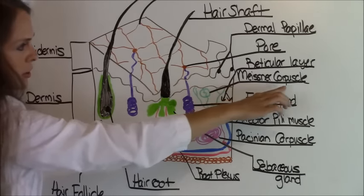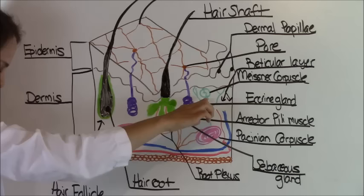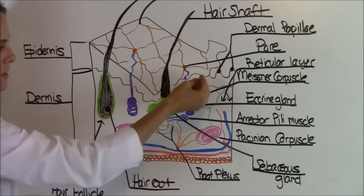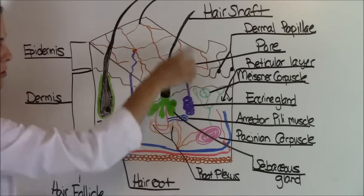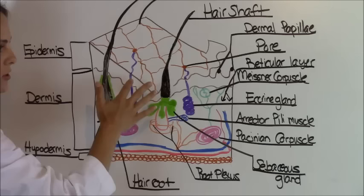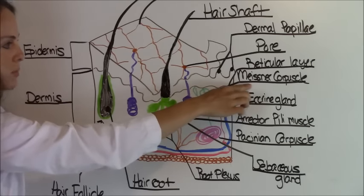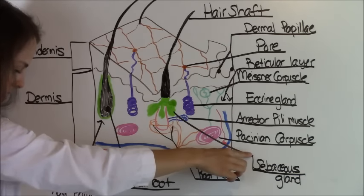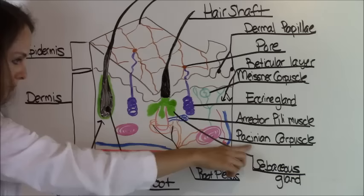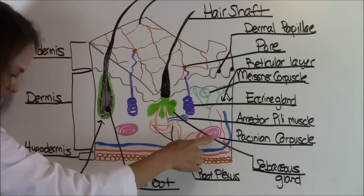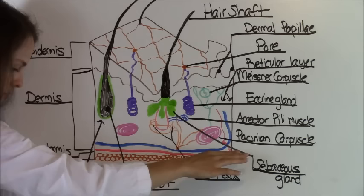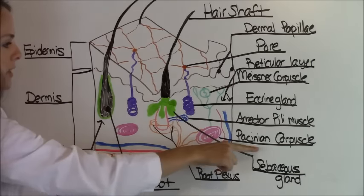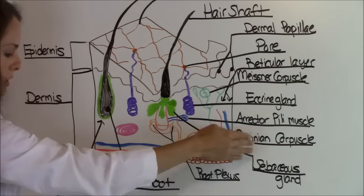Next we have the Meissner corpuscle. This is a nerve ending responsible for sensitivity to light touch. Notice it's located more superficial up in the skin because whenever you're lightly touched this is what is responsible for you feeling that sensation. The next nerve ending is called the Pacinian corpuscle, these little pink swirly things right there, and that is responsible for our sensitivity to pain and pressure. So whenever you get pain on your skin or pressure this is responsible for you feeling that.